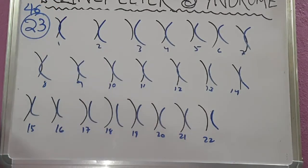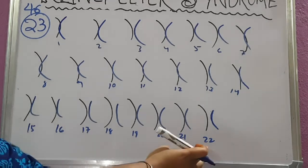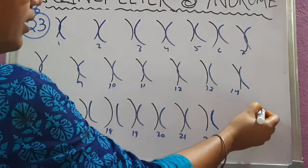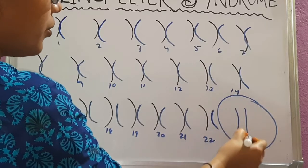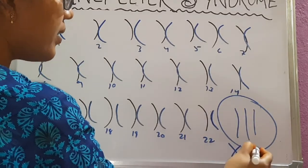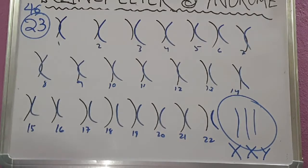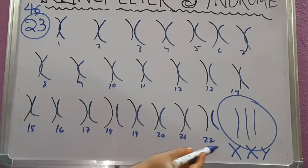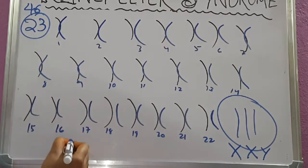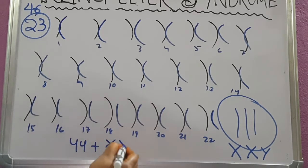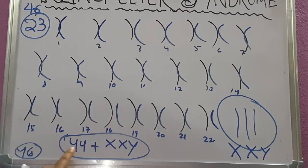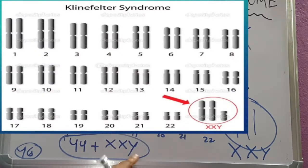The XXY condition is termed Klinefelter syndrome. Normally humans have 23 pairs of chromosomes, that is 46. In Klinefelter syndrome there are 22 pairs of autosomes plus an extra sex chromosome, giving the structure XX and Y. The chromosomal formula is 44 plus XXY.